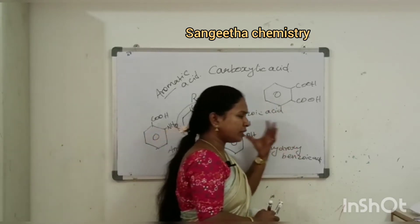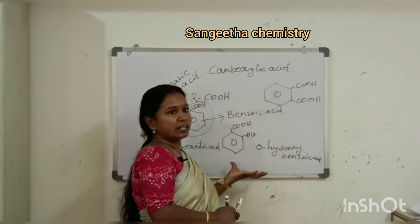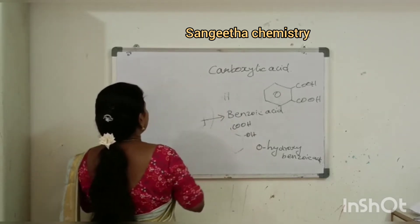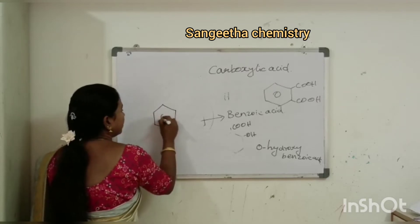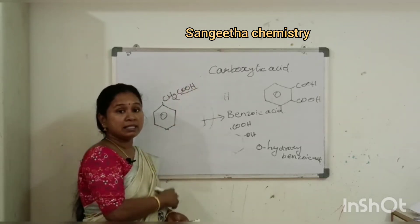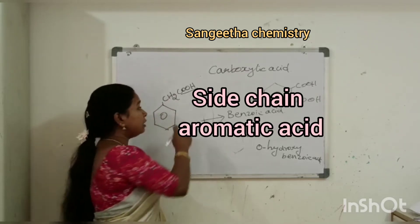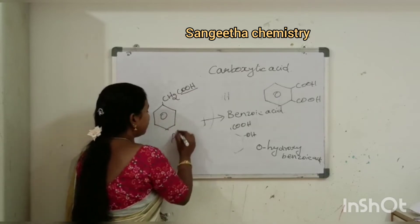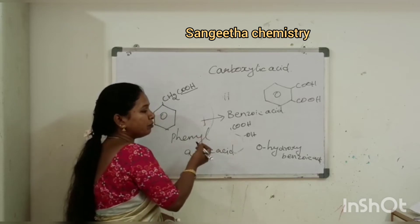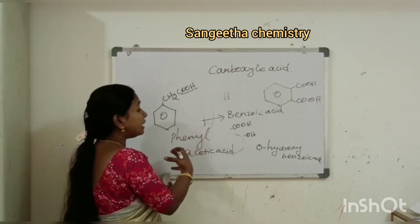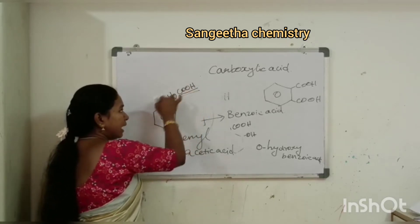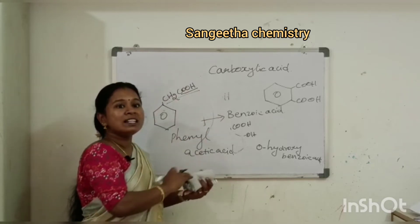In aromatic acid, the carboxylic group is directly attached to benzene. For example, if the structure has a benzene ring with CH2-COOH, the carboxylic group is not directly attached to the aromatic ring — it is attached to the side chain. This is called a side chain aromatic acid.